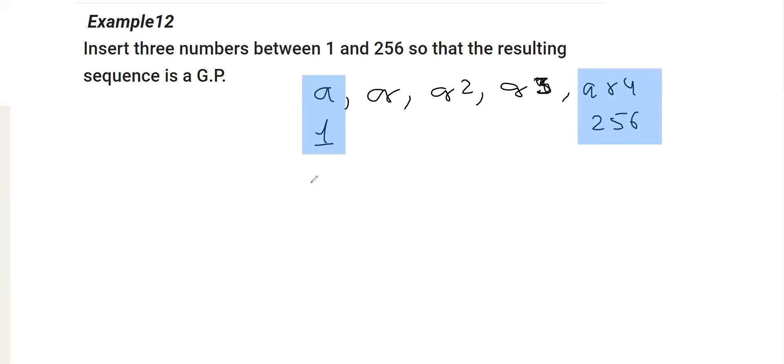So, what do we do here? I'm writing A as 1 and I'm writing AR raised to the power 4 as 256 here. This is replacing A with 1, A being multiplied with any number is the number itself. That is 256 and R raised to the power 4.